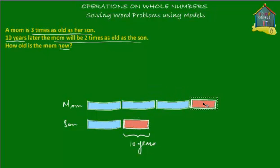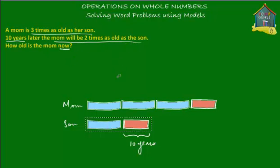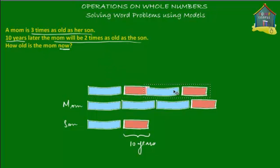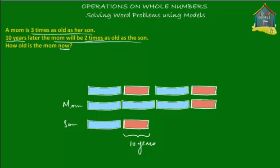So mom 10 years later is three blue blocks plus one pink block. And the son 10 years later is one blue block and one pink block. We know that 10 years later, the mom will be two times as old as the son. So the son is one blue block and one pink block, which means the mom must be two times that — two blue blocks and two pink blocks.